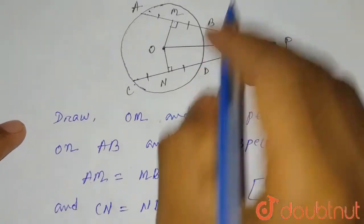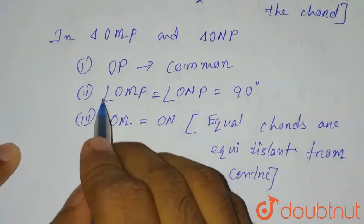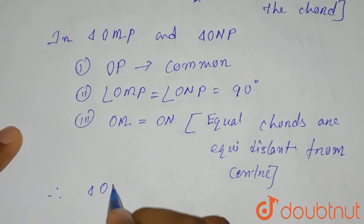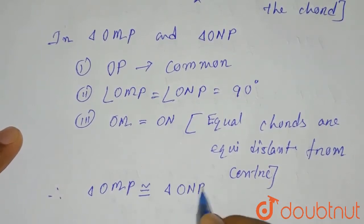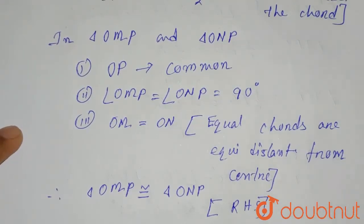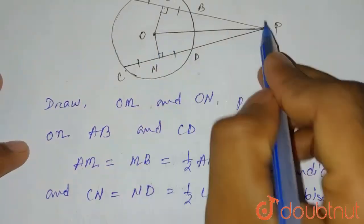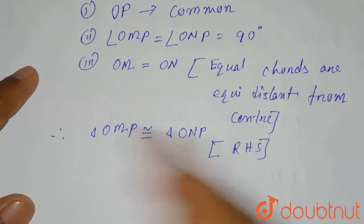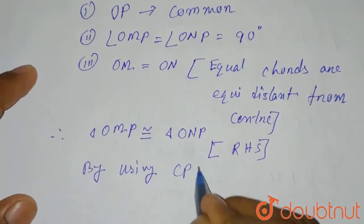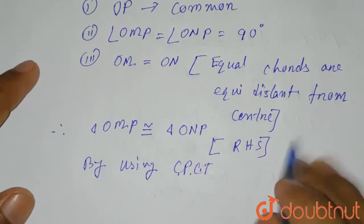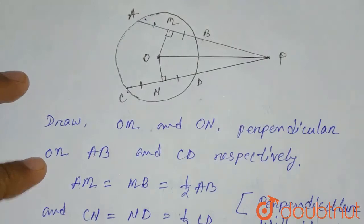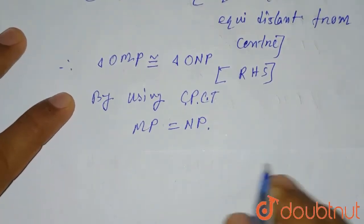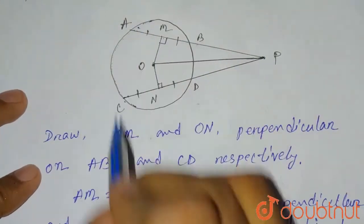Since OP is common, two angles are 90 degrees, and the other sides are equal, these two triangles are congruent. Therefore, triangle OMP is congruent to triangle ONP by the RHS rule — OP is the hypotenuse, the right angle is established, and OM equals ON. By CPCT (corresponding parts of congruent triangles), MP equals NP.